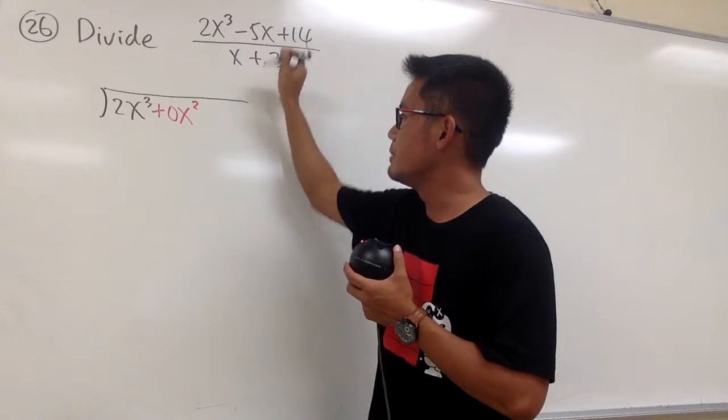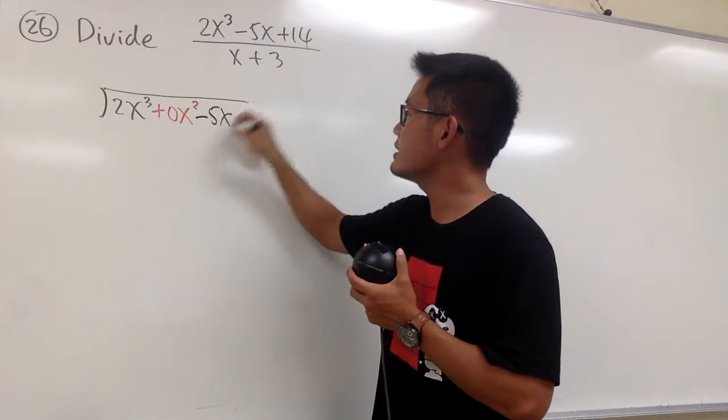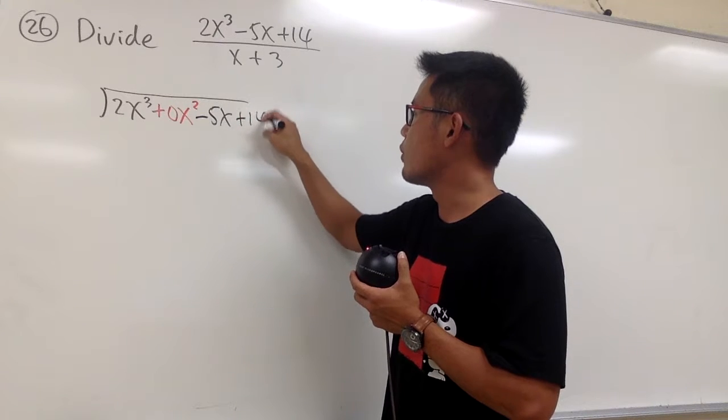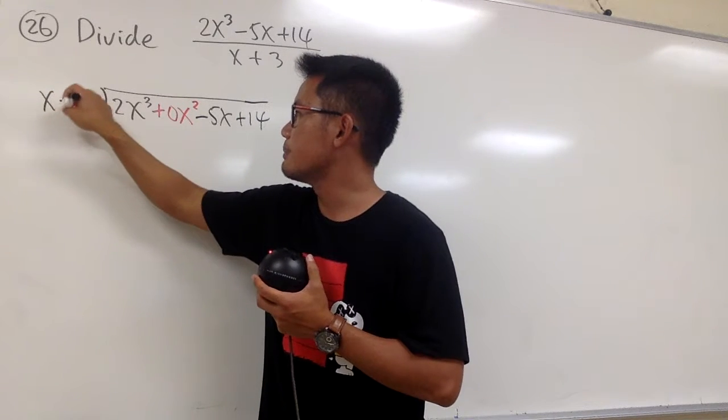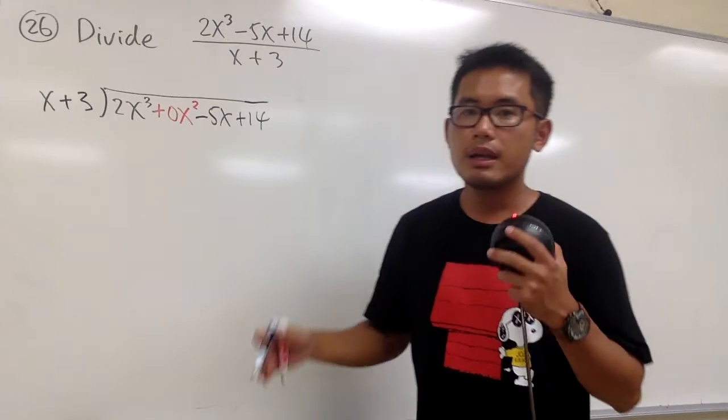Anyway, we continue. So we just keep this right here, minus 5x, and at the end we have the plus 14. And we put this outside, which is the x plus 3, right here.